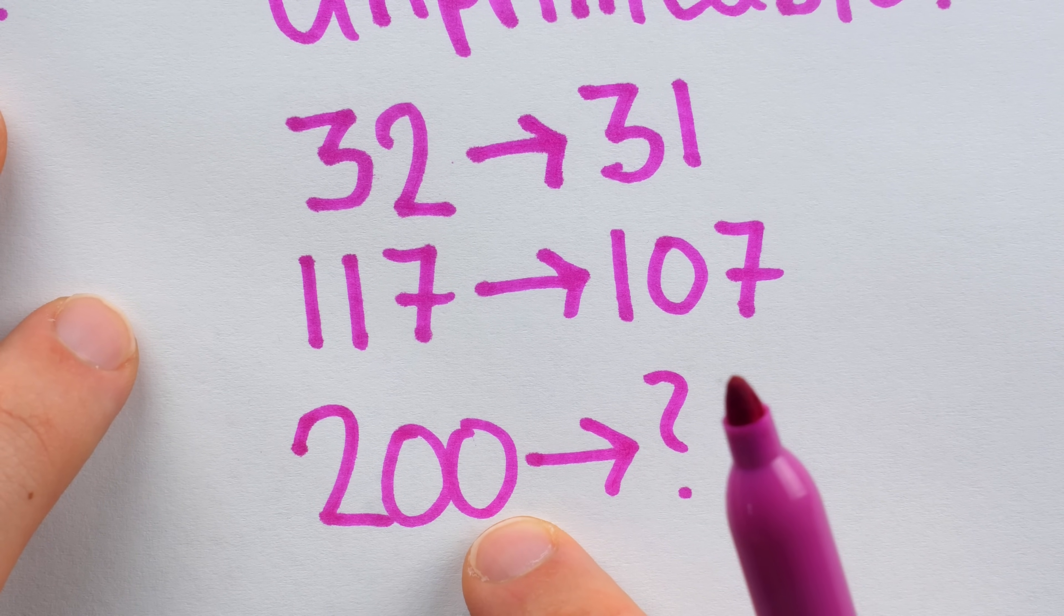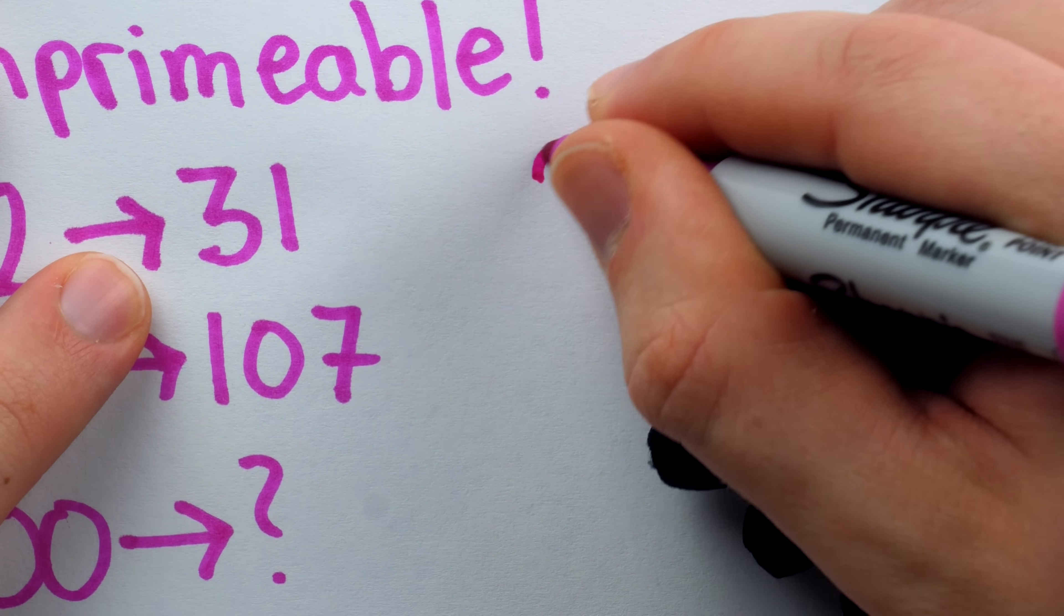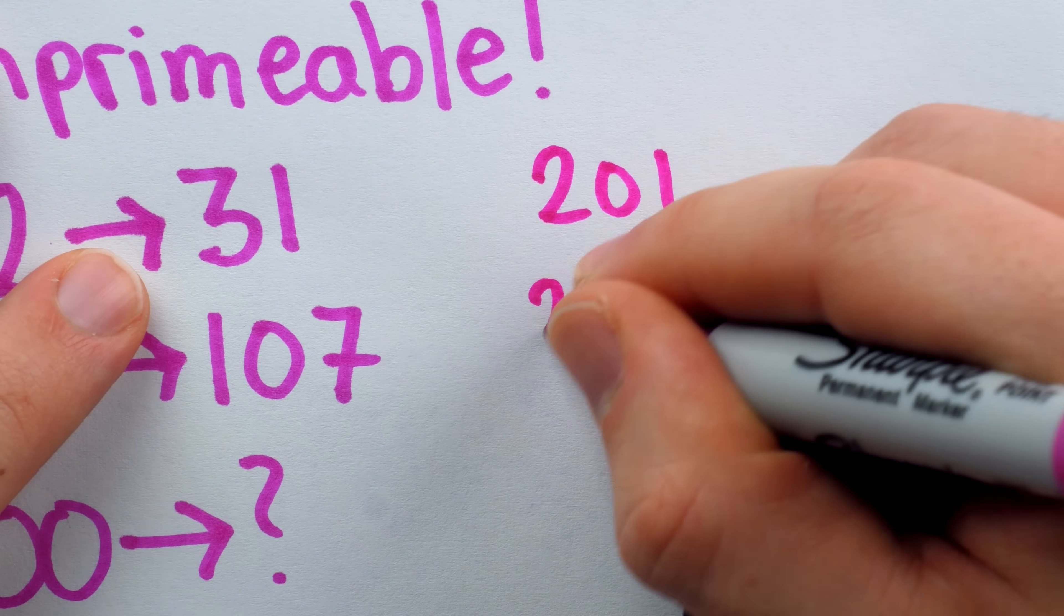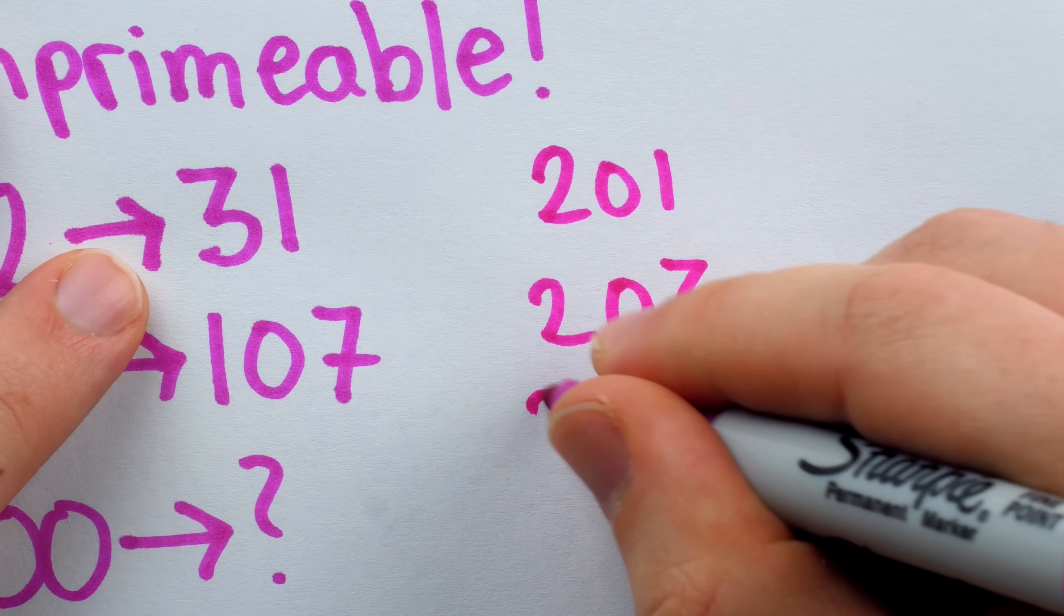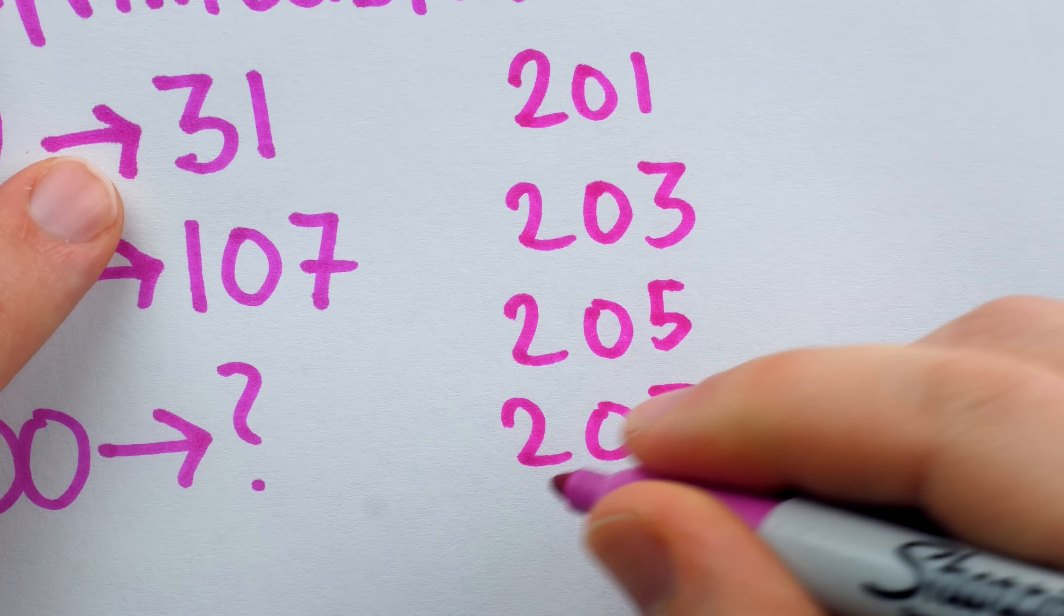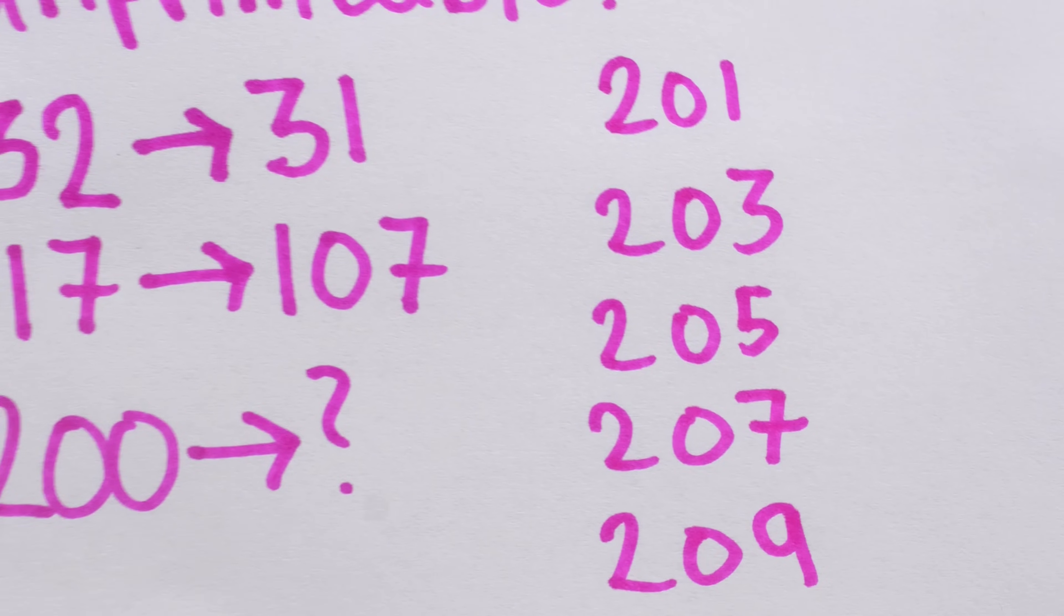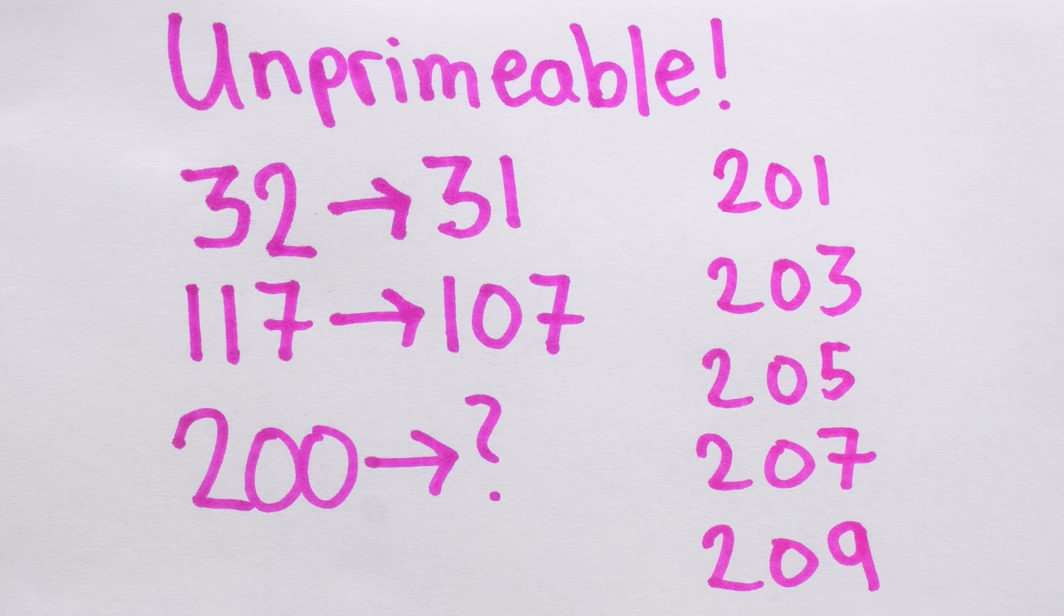So the last digit would have to be changed, and it would have to be changed to an odd number, but that only leaves the option of 201, which isn't prime, 203, which isn't prime, 205, which isn't prime, 207, which isn't prime, and 209, which isn't prime. So it is the smallest unprimable number. That's pretty cool.